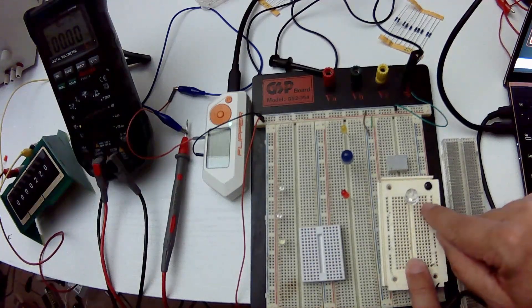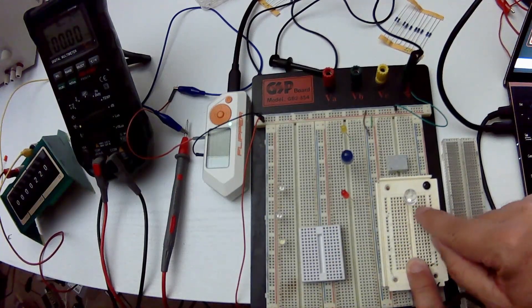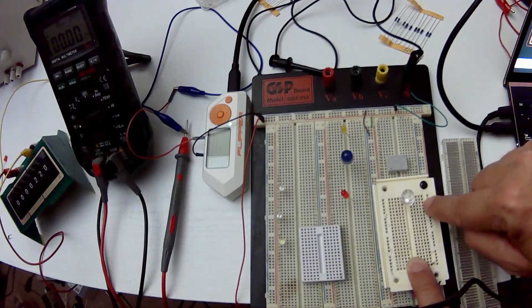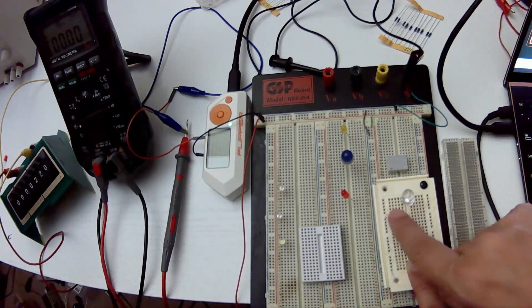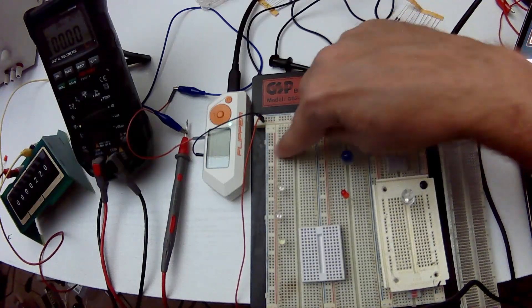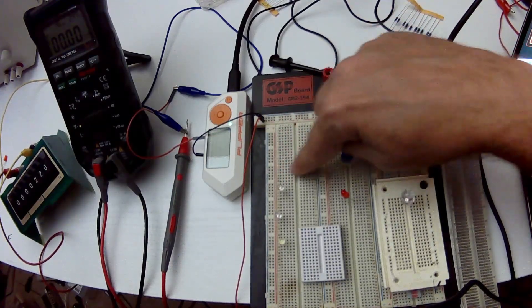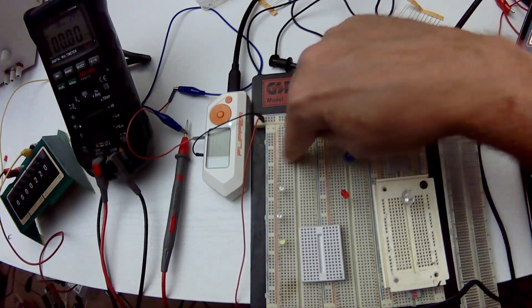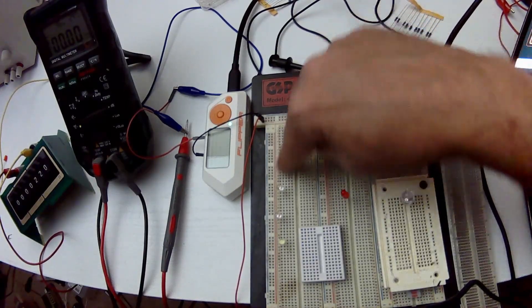Each row of five pins is connected together via a metal clip underneath. On the other side, the five pins are connected to each other. Each row is connected together, but each column is independent of the other column. So these are all independent and these are all independent. They're not connected together from each other.